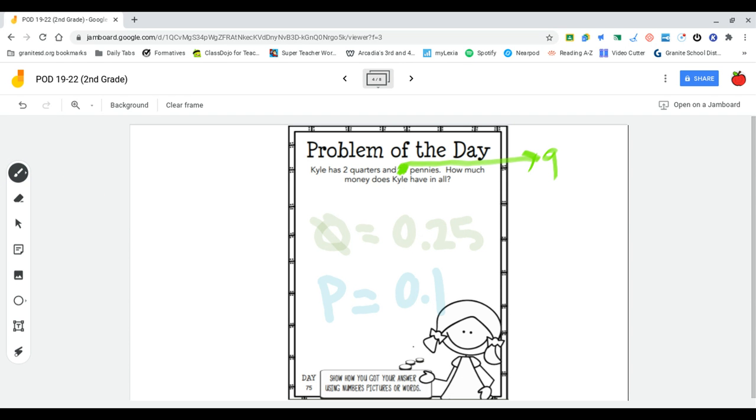Step one is I'm going to figure out how much money Kyle has in quarters first. So if one quarter is 25 cents and he has two, I'm going to add 25 cents to 25 cents.